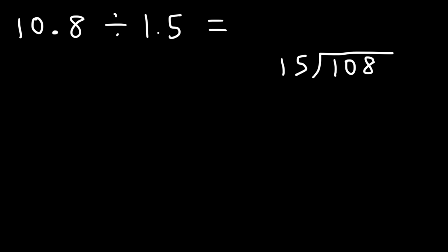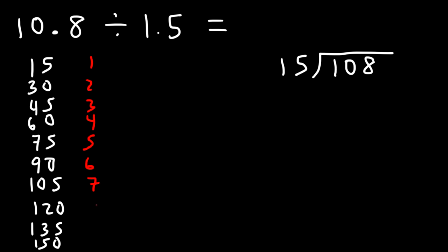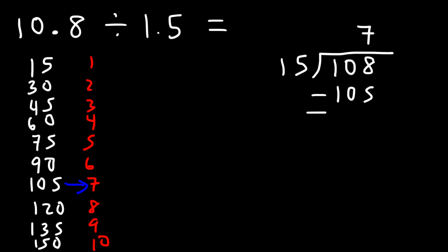How many times does 15 go into 108? Let's make a list: 15, 30, 45, 60, 75, 90, 105, 120. Since 120 exceeds 108, the highest number just under 108 is 105. So 15 goes into 108 seven times — 15 times 7 is 105, and 108 minus 105 is 3.